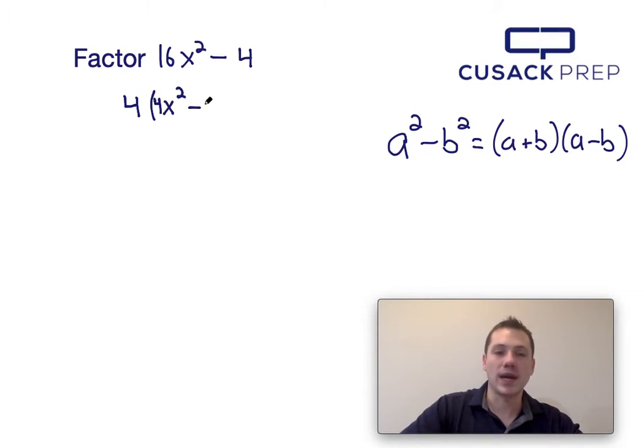When I take a 4 out of 16x squared, I'm left with 4x squared. When I take 4 out of 4, I'm left with 1.